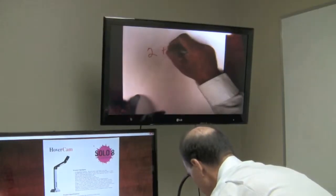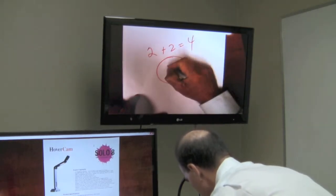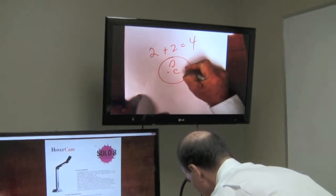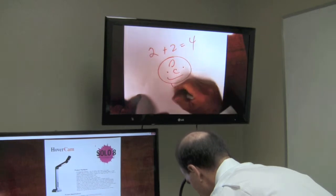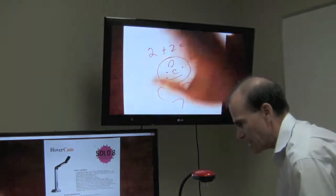So 2 plus 2 equals 4. And then we can have a little bit of fun drawing my old friend Charlie Brown to see how that looks. So you can see a little bit of delay in the image.